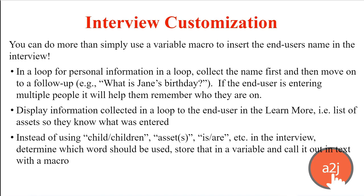You can display information collected in a repeat loop to the end user in a learn more. So for example, if you have a question that says 'do you want to add any more assets to the list you've given me?', you can have a learn more that says 'what assets have I already told you about?' And then in the help, you can use a variable macro to call out all of the assets they've already entered — for example, 'you've already told me about your house, your car, your boat, and your jet ski.'